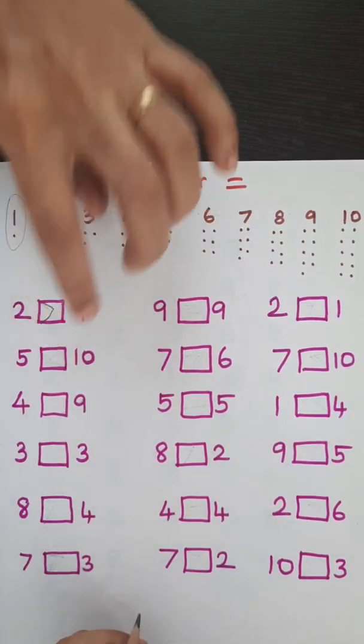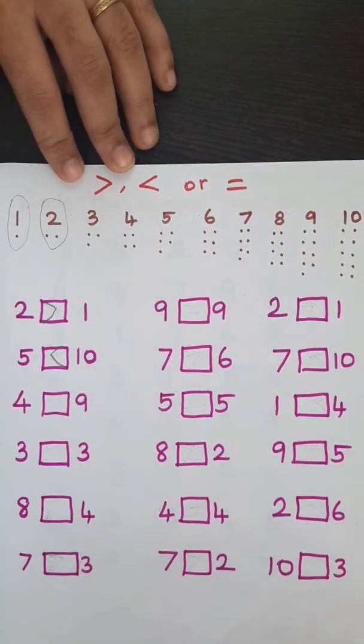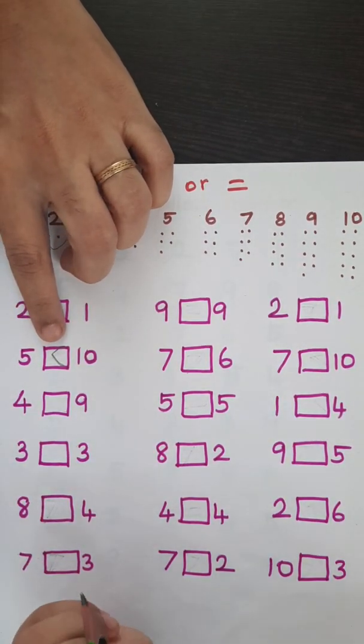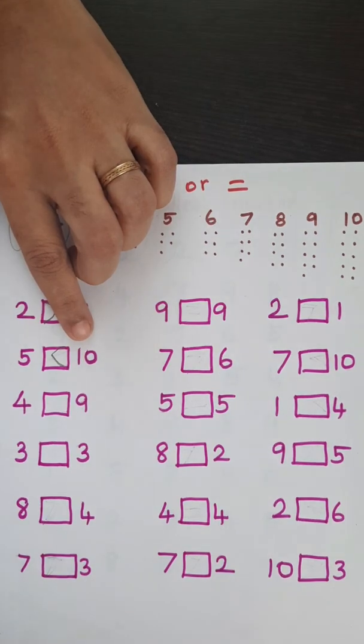Okay. Can you do the next one? Yeah. How do you say this? 5 is smaller. 10 is bigger. Very good.